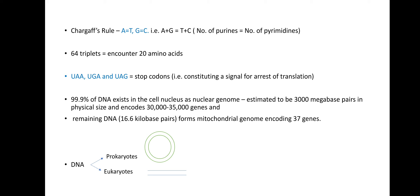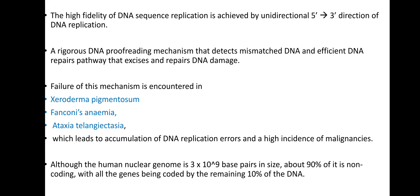DNA of prokaryotes and eukaryotes is depicted in the figure. The high fidelity of DNA sequence replication is achieved by unidirectional 5' to 3' direction of DNA replication, a rigorous DNA proofreading mechanism that detects mismatched DNA, and efficient DNA repair pathways that excise and repair DNA damage. Failure of this mechanism is encountered in xeroderma pigmentosa, Fanconi's anemia, and ataxia telangiectasia, which leads to accumulation of DNA replication errors and a high incidence of malignancies.